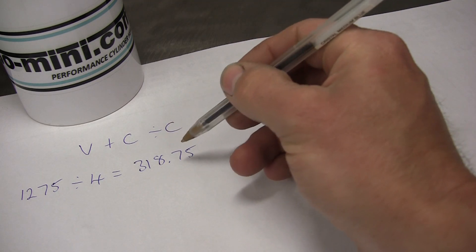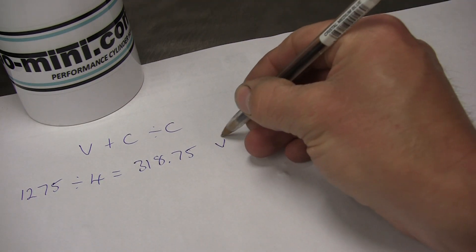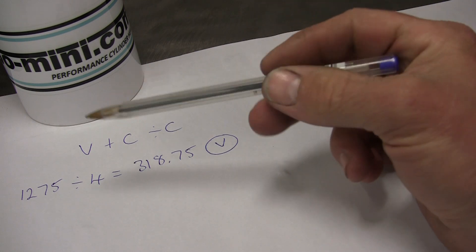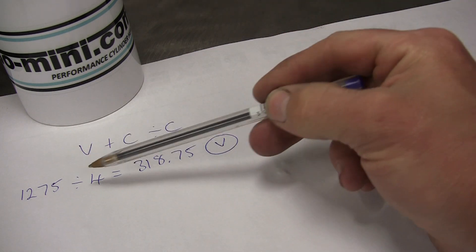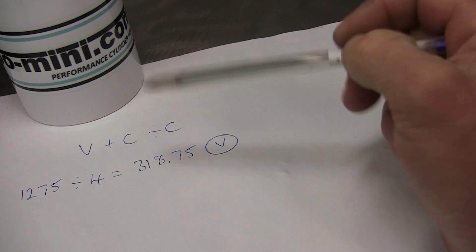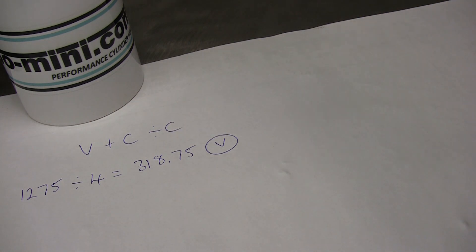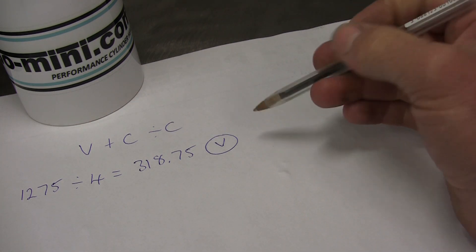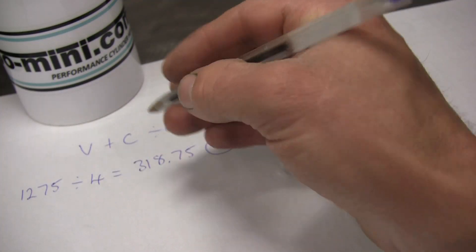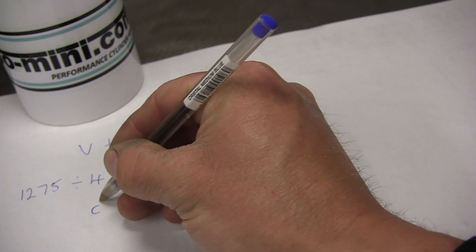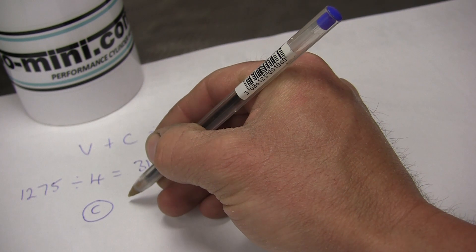That's the swept volume of one cylinder, and that's V. Super simple. You can work that out as long as you know your engine capacity divided by four—that gives you the swept volume of one cylinder. Couldn't be any easier, really.